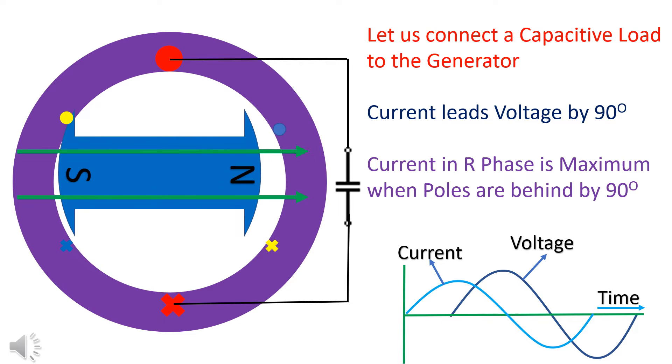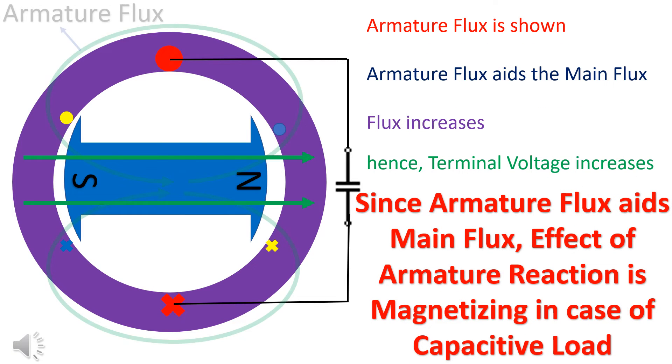Let us see the effect of connecting the capacitive load to the generator. Since current leads voltage by 90 degrees, poles are required to be rotated back by 90 degrees to get maximum current in the R phase. Armature flux adds to the main flux. Hence, effect of armature reaction is demagnetizing in the case of capacitive load.